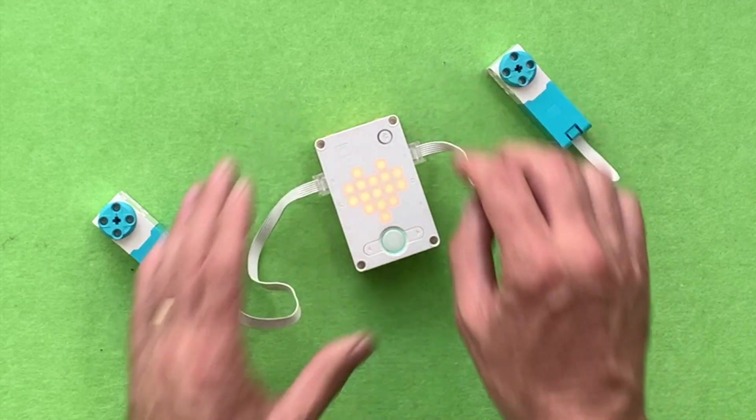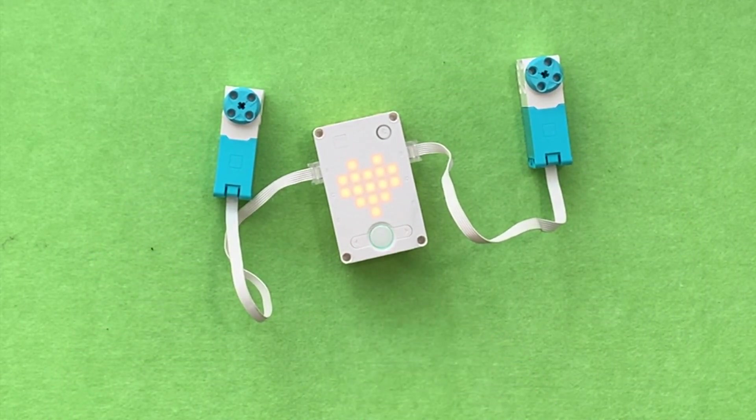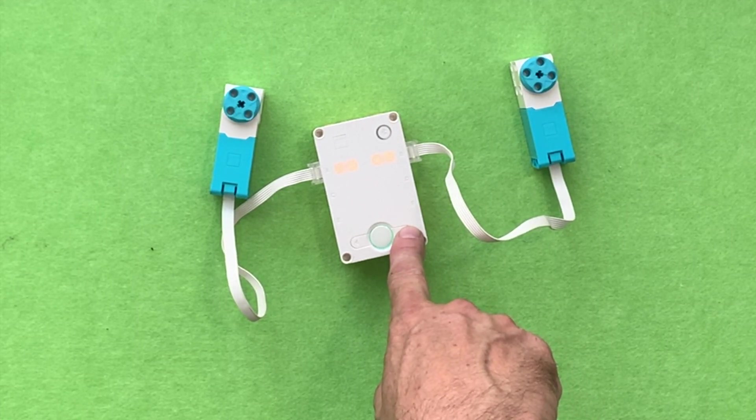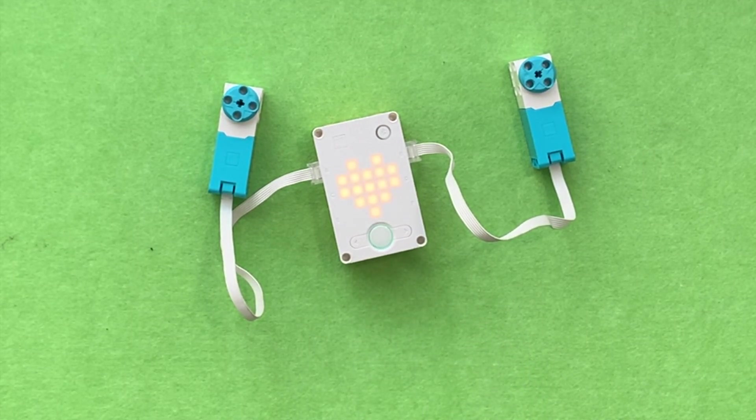I'm going to plug two motors in together and they're going to work together as movement motors. So you run the code by pressing the power button and then you can press the arrow key to make both motors spin at the same speed.